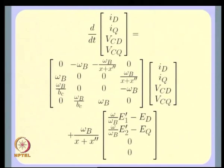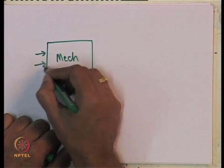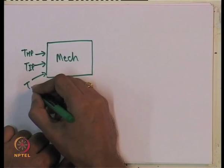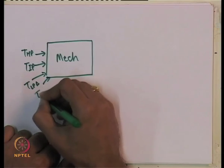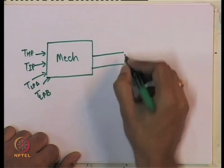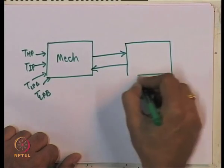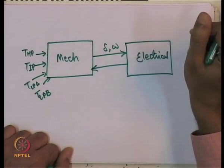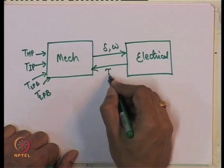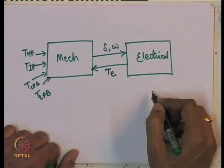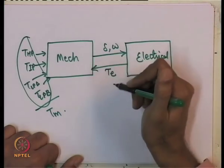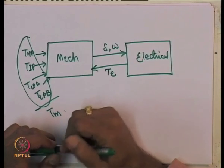Combining all these equations gives a linear state space equation with a constant A matrix. However, E1_dash and E2_dash are dependent on delta and the rotor fluxes. The electrical system is affected by omega — the speed of the generator — and E1_dash, E2_dash are also functions of delta, which is the rotor position. There is a coupling: delta and omega of the generator affect the electrical variables, and the electrical torque affects the mechanical equations.